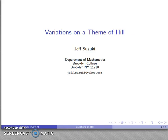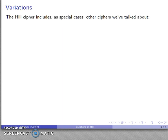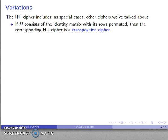One of the nice things about the Hill cipher is that any of the ciphers we've looked at can be reproduced using an appropriately chosen Hill matrix. For example, if I take a matrix that is the identity matrix but permute the rows in some fashion, what I end up with is a transposition cipher.